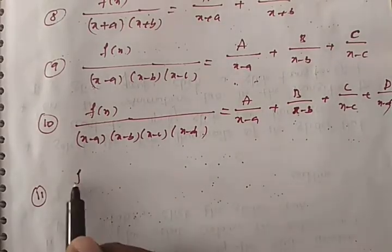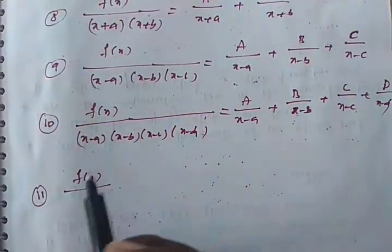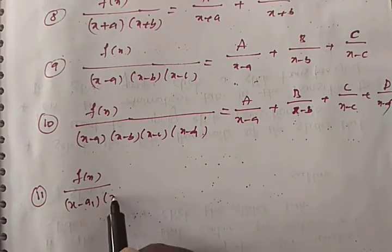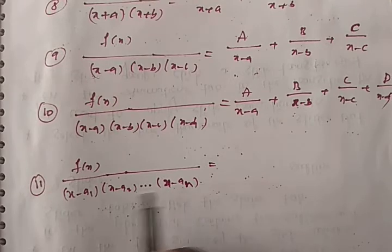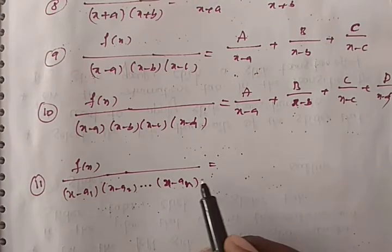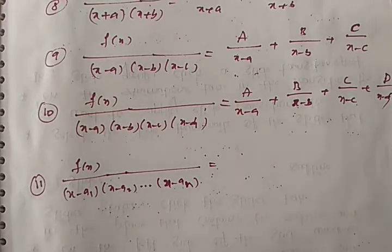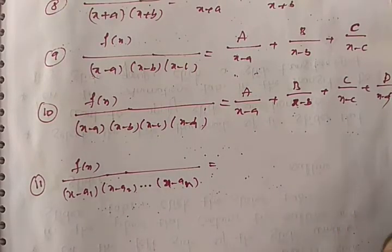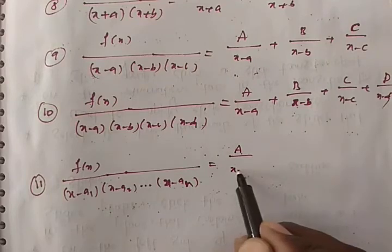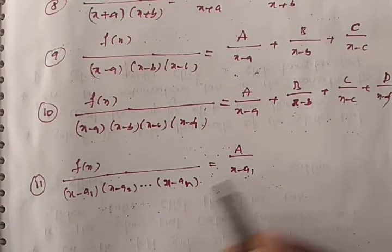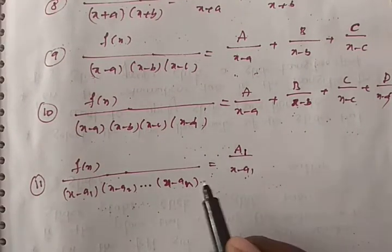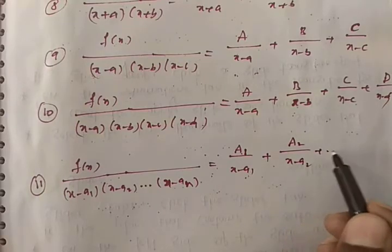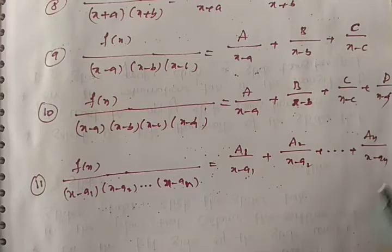Now the general level: if the denominator is (x minus a1)(x minus a2)...(x minus an), it contains a product of n distinct linear polynomials. Since we have n factors, the right-hand side must have n fractions: A1 by (x minus a1) plus A2 by (x minus a2) and so on up to An by (x minus an).